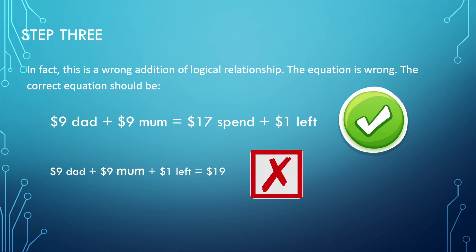Step 3: In fact, this is a wrong addition of logical relationship. The equation is wrong. The correct equation should be $9 (dad) plus $9 (mom) equals $17 spent plus $1 left. But it's not $9 (dad) plus $9 (mom) plus $1 left equals $19.